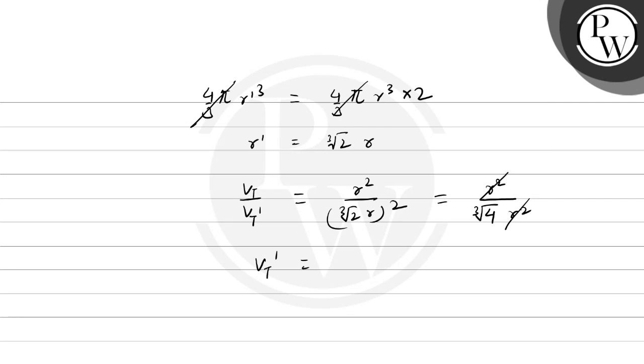vt' equals cube root of 4 times vt. vt is 5 centimeter per second. vt' equals cube root of 4 times 5 centimeter per second.